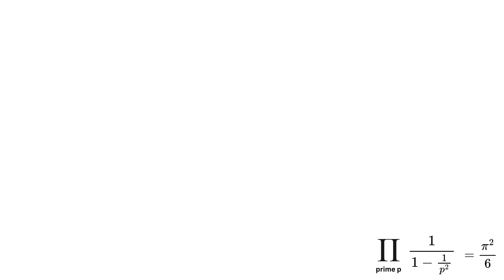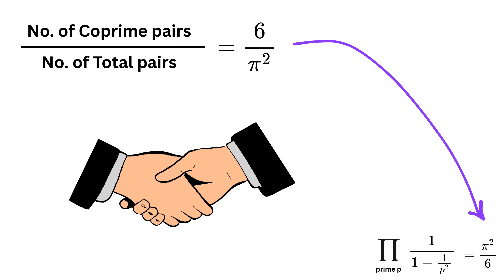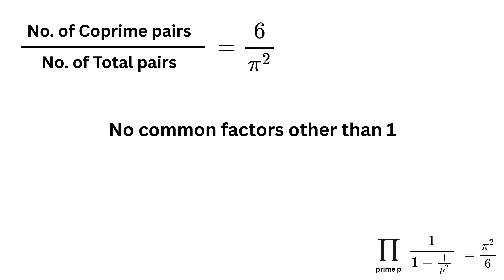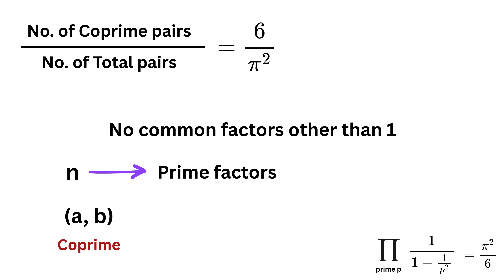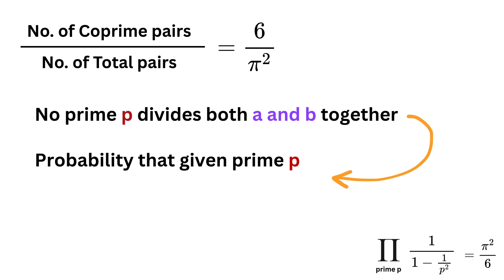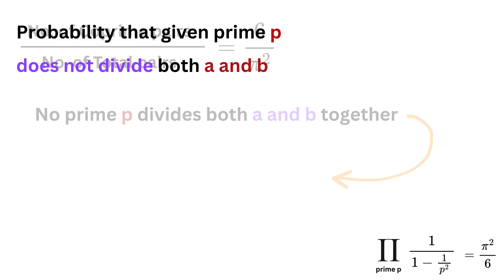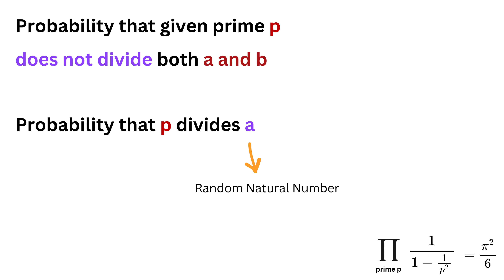Coming back to our original problem: why does dividing co-prime pairs by total generated pairs give exactly six divided by pi squared? Two numbers are co-prime if they share no factor except one. Since every number is made from primes, two numbers a and b are co-prime if they have no common prime factors — meaning no prime p divides both a and b. So let us ask: what is the probability that a given prime p does not divide both a and b?